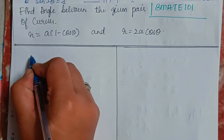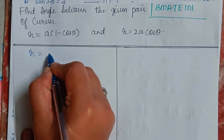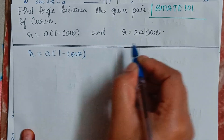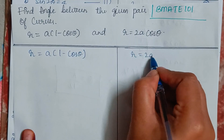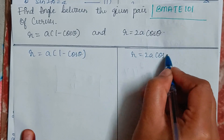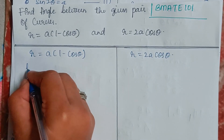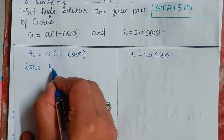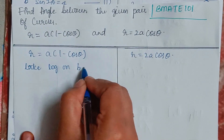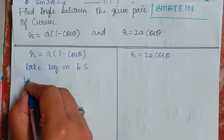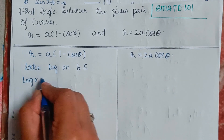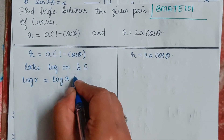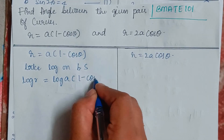We will write down the curves here. R equals A into 1 minus cos theta, and R equals 2A cos theta. First, we will take log on both sides. It will become log R equals log of A into 1 minus cos theta.